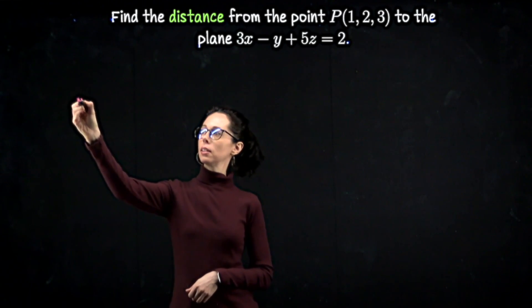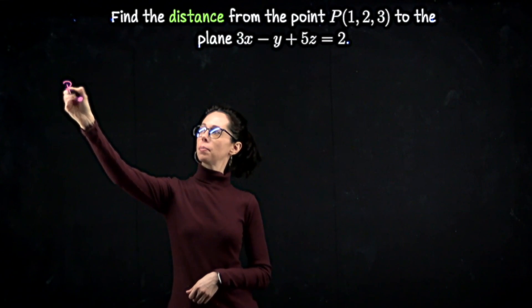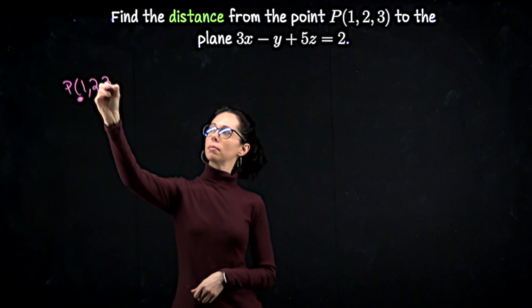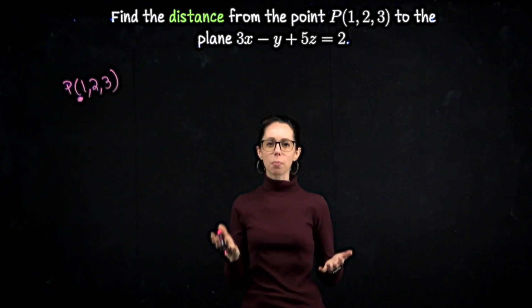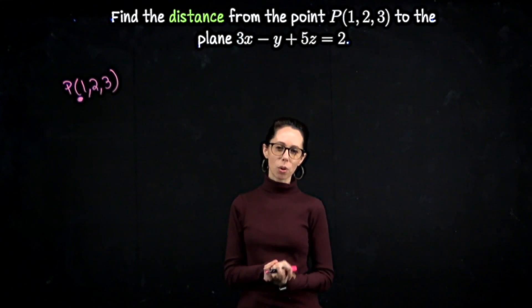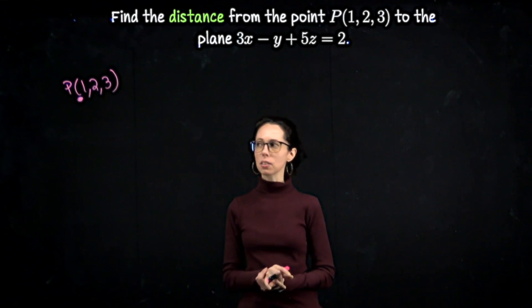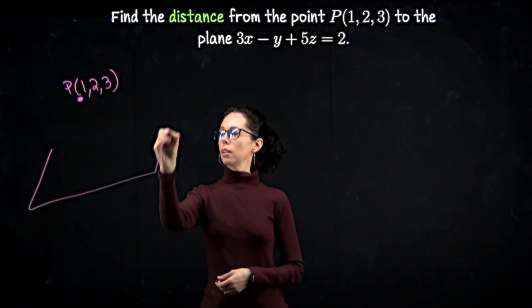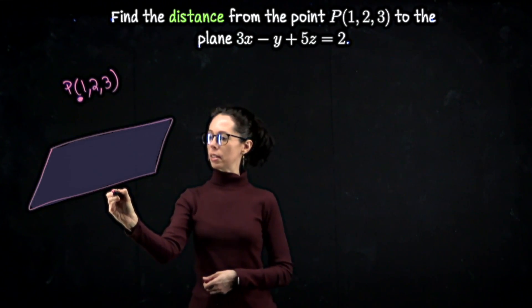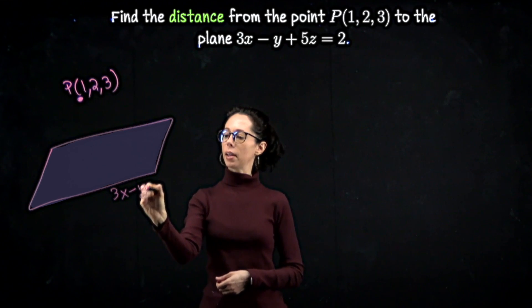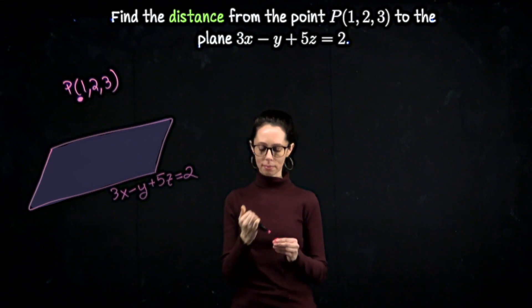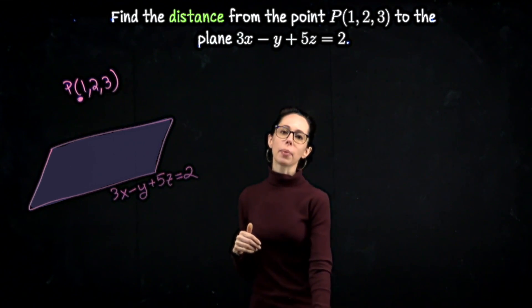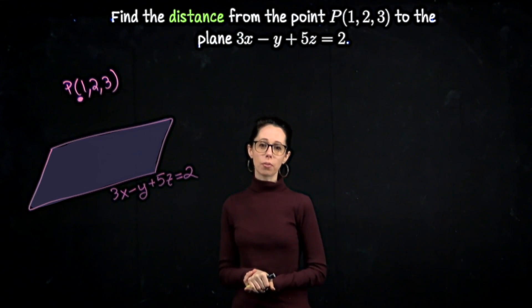Okay, so let's say the point (1, 2, 3) is here. I'm just going to drop it right there. I don't know exactly how the plane is situated relative to this point. I don't want to waste any time figuring out its tilt. So just draw a representative plane. So this is 3x - y + 5z = 2.